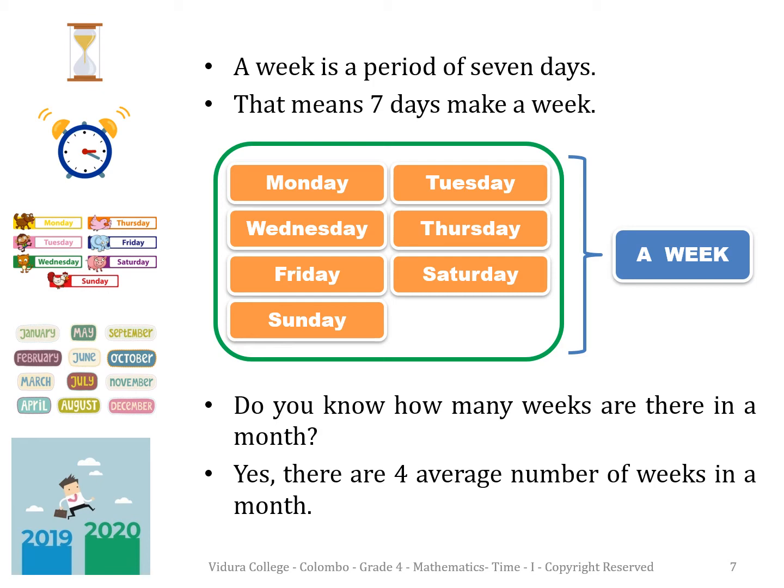A week is a period of seven days — that means seven days make a week. Look at the given diagram. Now, can you tell me how many weeks are there in a month?